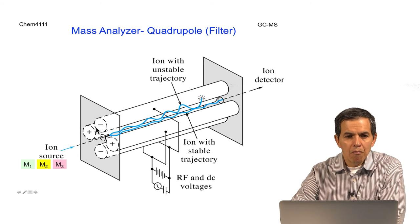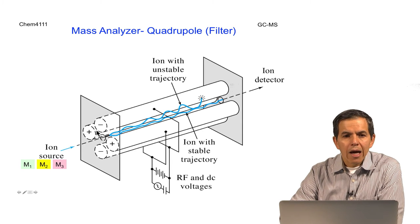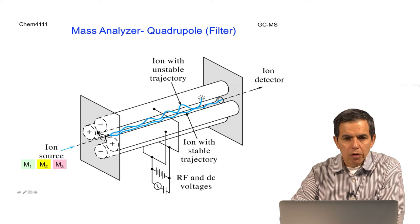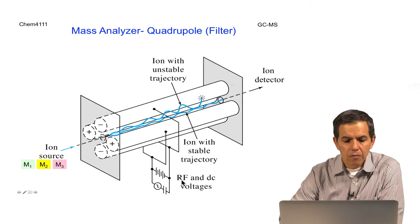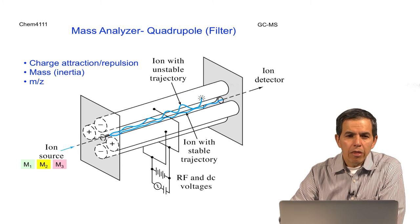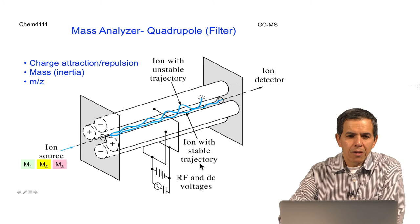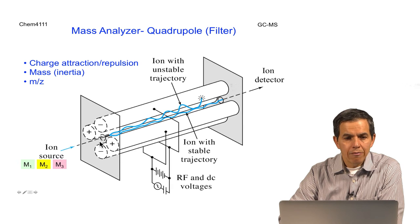The voltage then—each of these poles will have a voltage. The voltage is made of two components, an RF component or radio frequency component and a DC component. It's important to note that these will be a direct component, the DC, and the RF will be oscillating as a function of time.